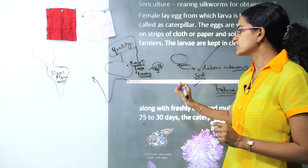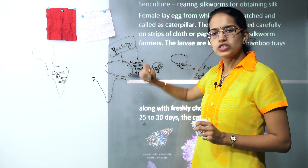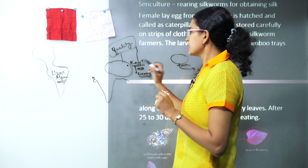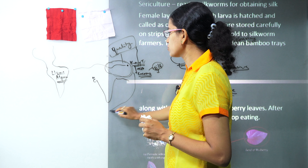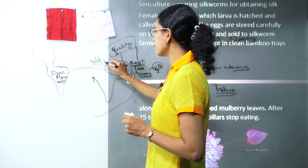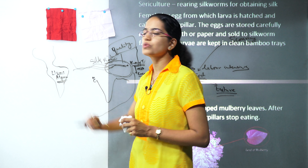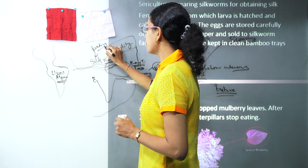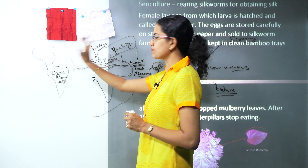Initially when silk was discovered, the concept was kept secret within China. But slowly and gradually, with navigators and sailors coming in, this idea travelled across the world — through the land and the waters, but mainly through the land — and this route became famous as the Silk Route. The Silk Route carried silk from China to parts of Europe, and the trading of silk gave good business to Chinese people in European nations.